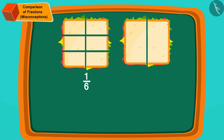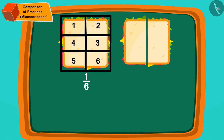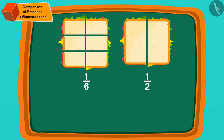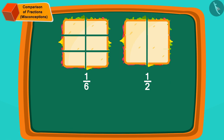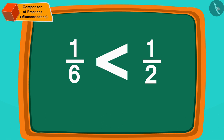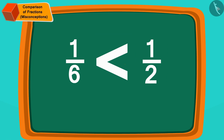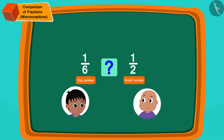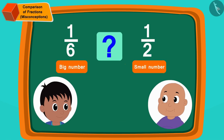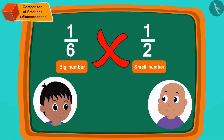Similarly, in one-sixth we have made a total of six pieces of the sandwich, whereas in one-half we have made only two parts. Therefore a piece of one-half is larger than a piece of one-sixth. We can say that the fraction one-half is greater than the fraction one-sixth. Therefore Rajoo's statement is not correct.